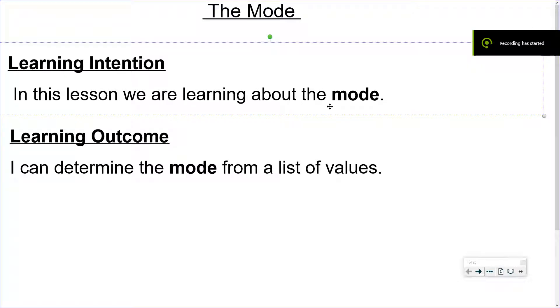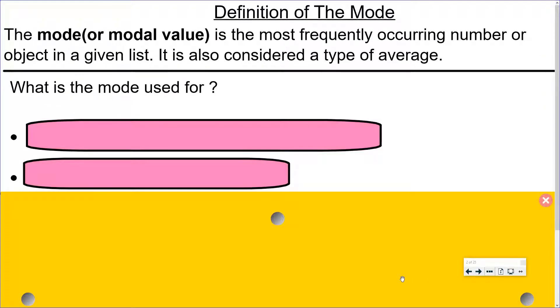Hello everyone. In this lesson we are learning about the mode. The learning outcome is I can determine the mode from a list of values. The mode or modal value is the most frequently occurring number or object in a given list. It is also considered a type of average.